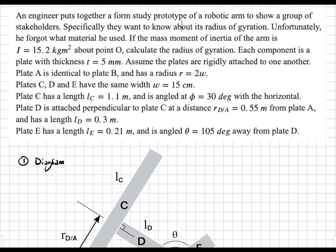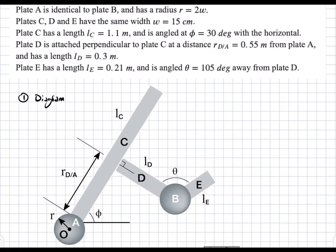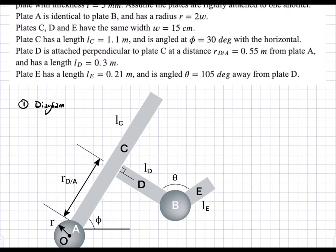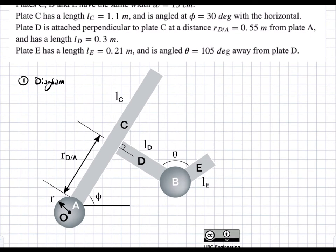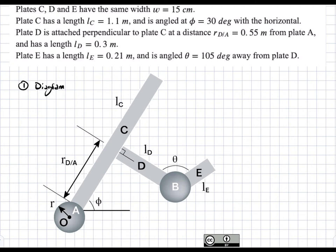In this problem, we're asked to determine the radius of gyration of the following structure about point O. We have two disks, A and B, of the same dimensions, and then we have three plates, C, D, and E, of different dimensions. Everything is of constant thickness into the page. Disks A and B are of the same dimensions, and all of the other geometrical properties are given.